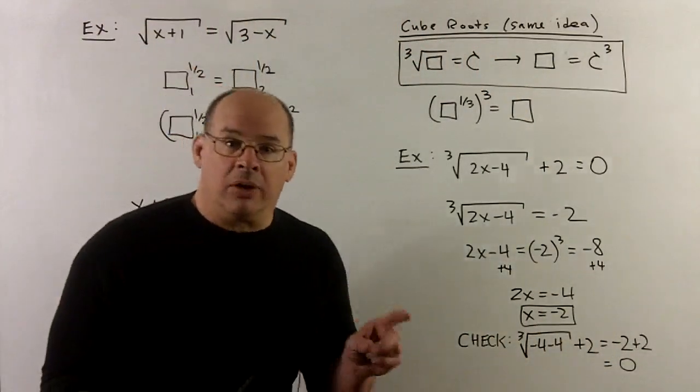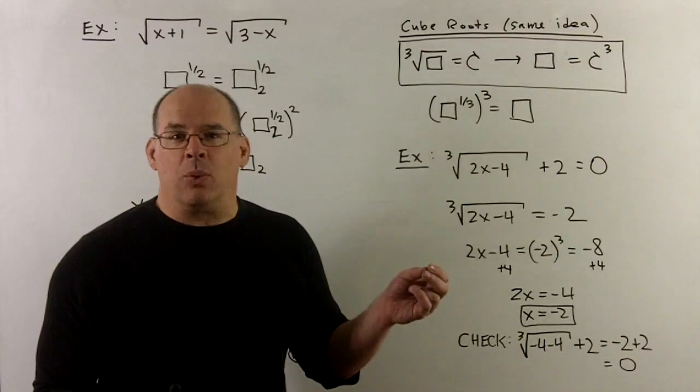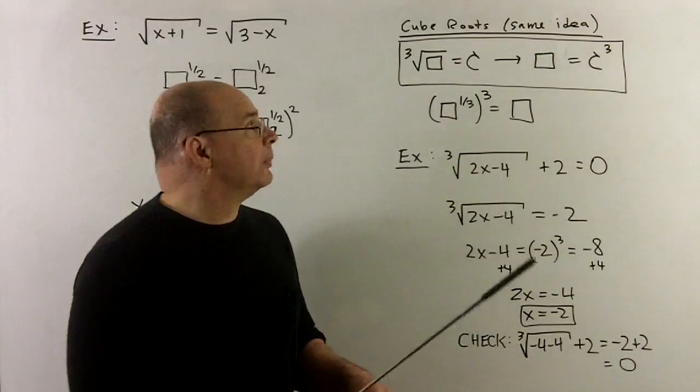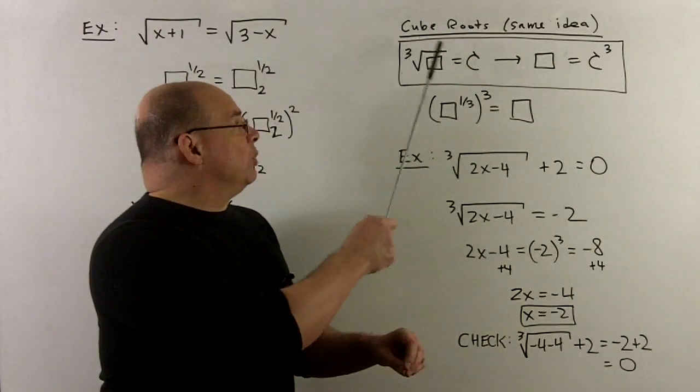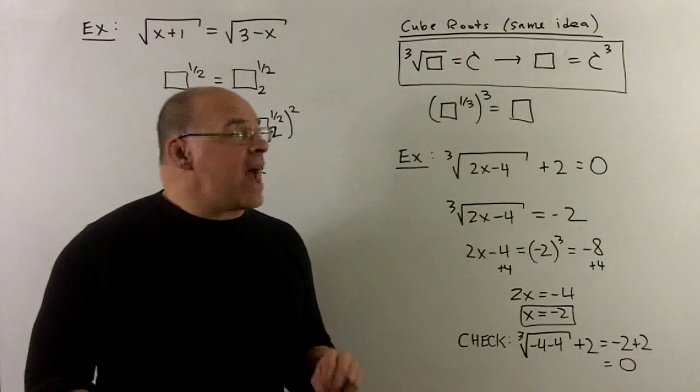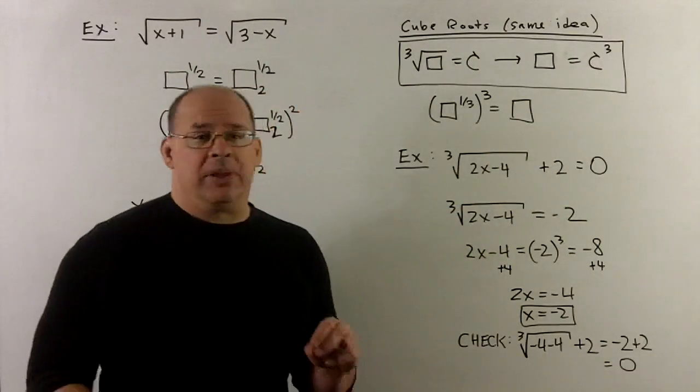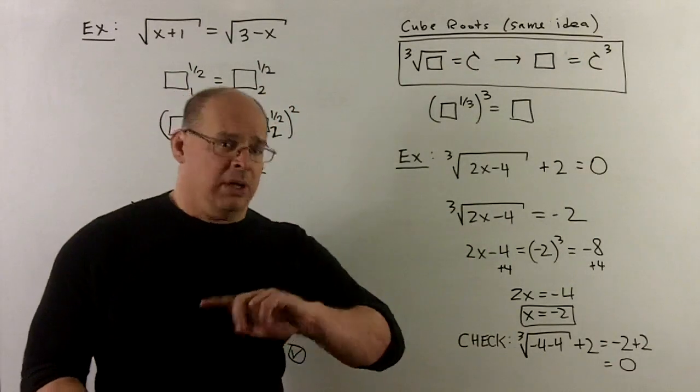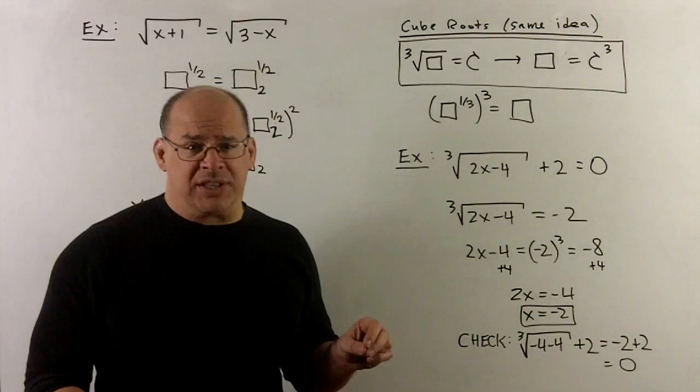What about other nth roots? So, let's look at a cubic, although this is going to point the way for any nth root. The rule we'll use, what we're going to change, if I have the cube root of box equal to c, to get rid of the radical, I'll just have box equal to c cubed now. And so, for an nth root, you're just going to flip over, take your c raised to the nth power instead.